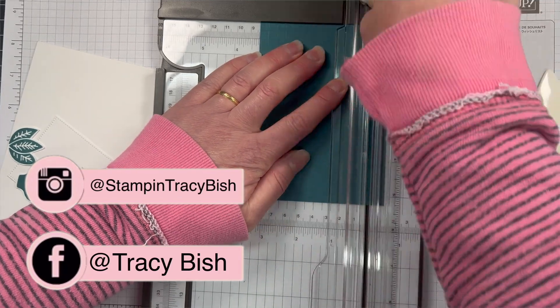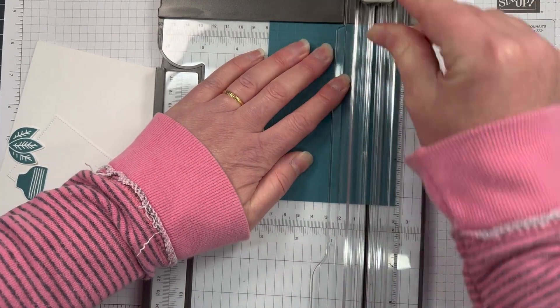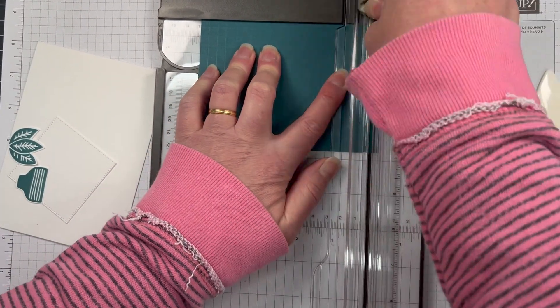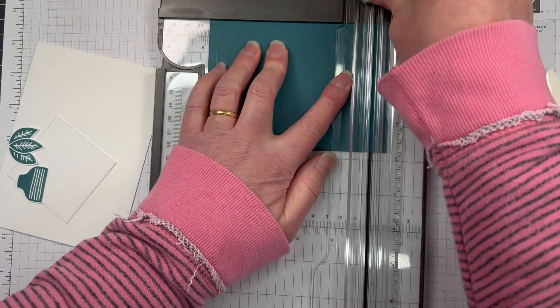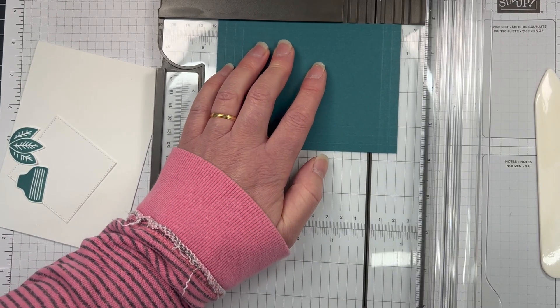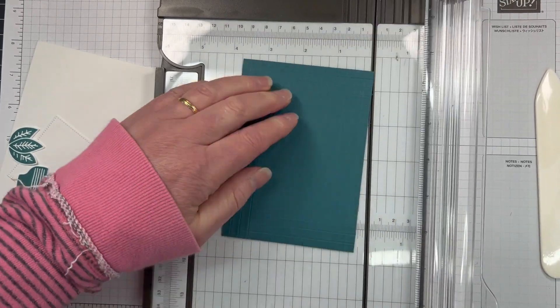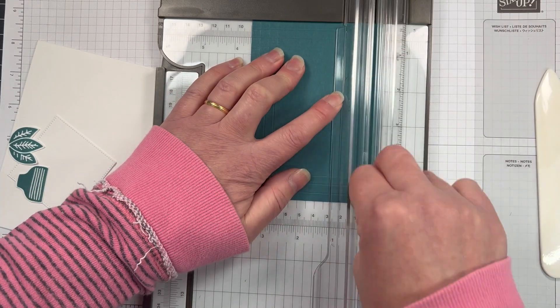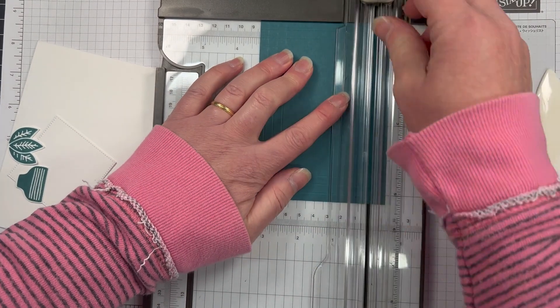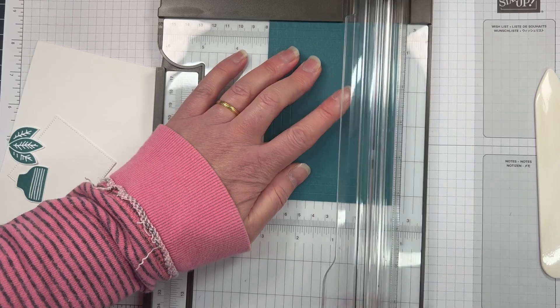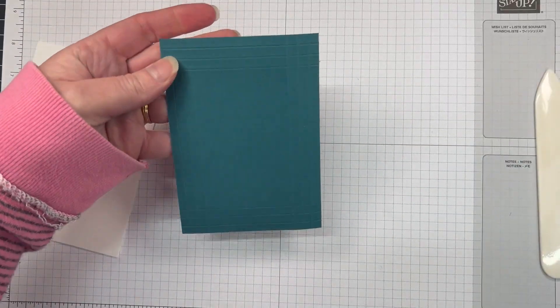I think it looks really great in real life as well. So just a little bit of a scoring frame all the way around that matting piece. I also wanted to sort of rough it up a little bit, so we're going to go around the edges of the Pretty Peacock card base and just rough up the edges as well.